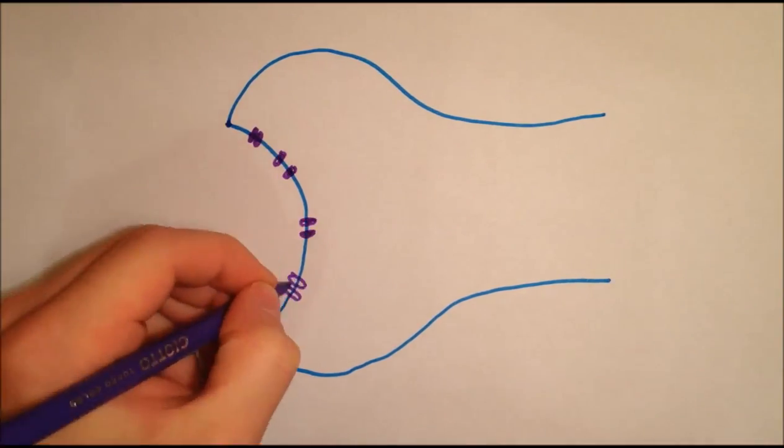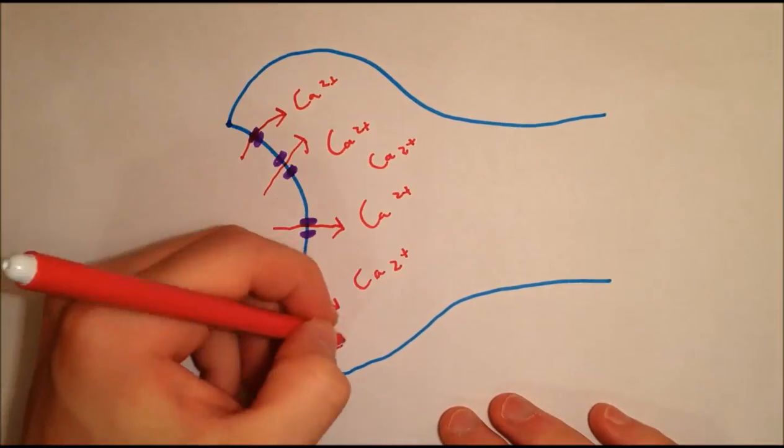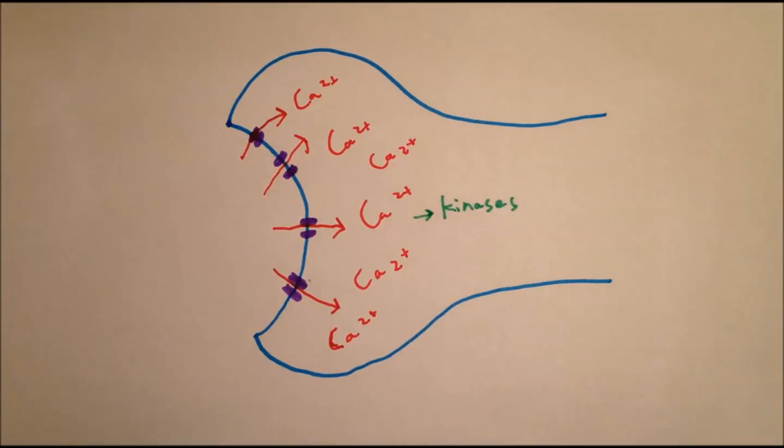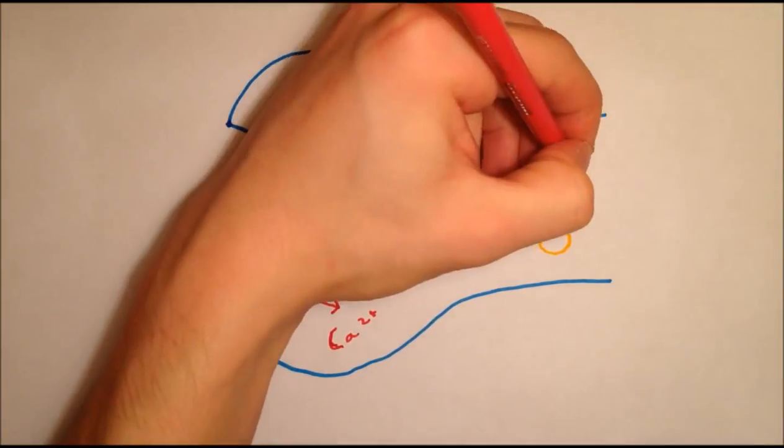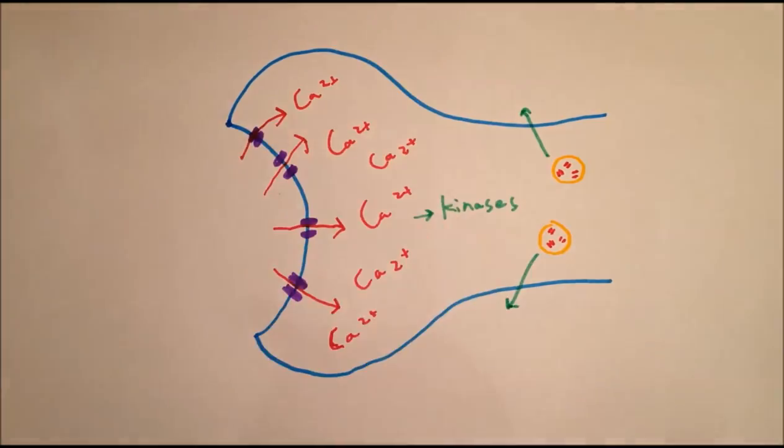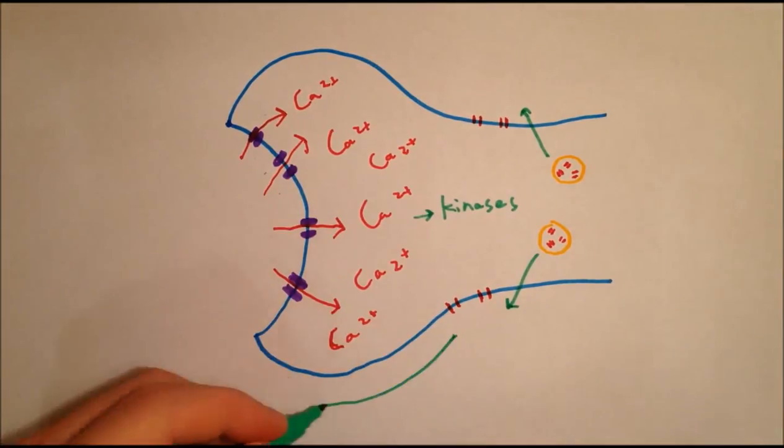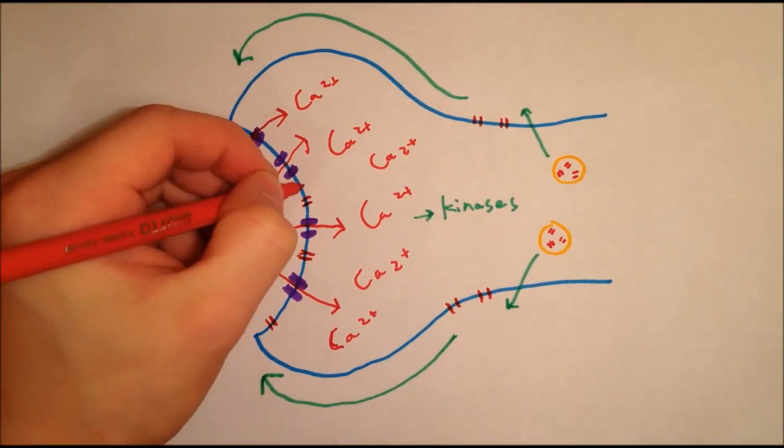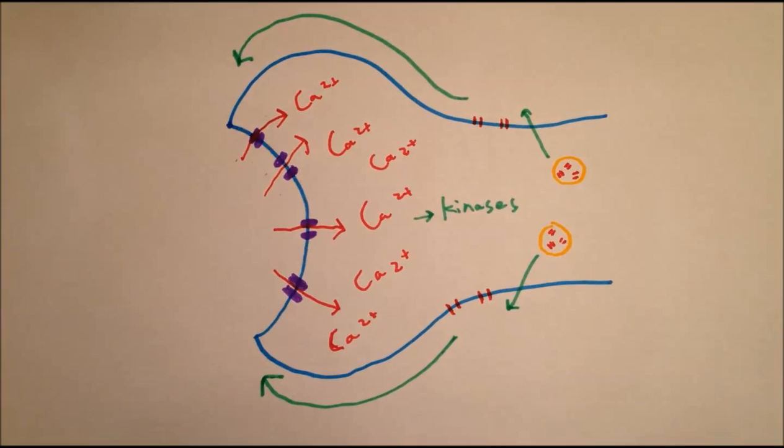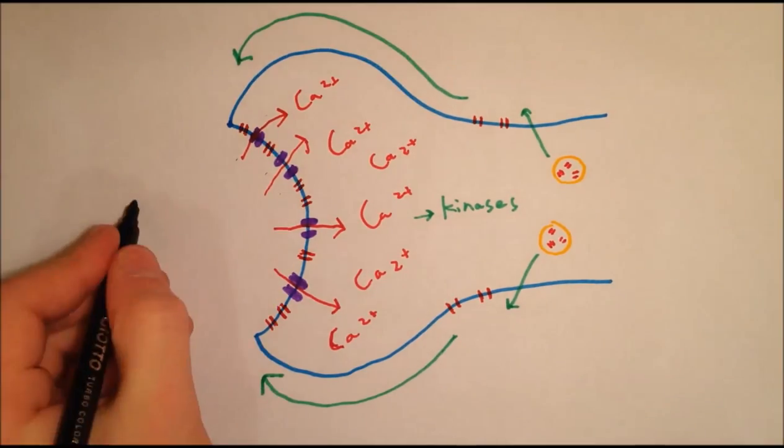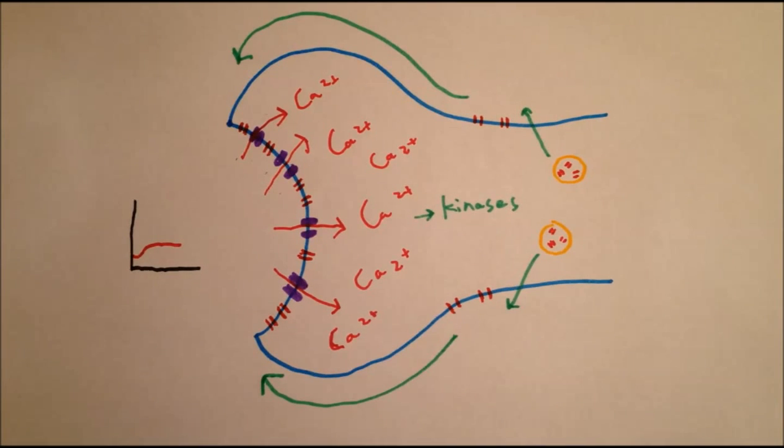A calcium influx large enough to cross a critical threshold will activate calcium-dependent kinases. These kinases alter the recycling of AMPA receptors. In particular, they increase the exocytosis of them. They also phosphorylate AMPA receptors, changing their structure to make them more permeable. This means that when glutamate crosses the synapse, more AMPA receptors are there to open, more current flows through, and the change in potential is increased.